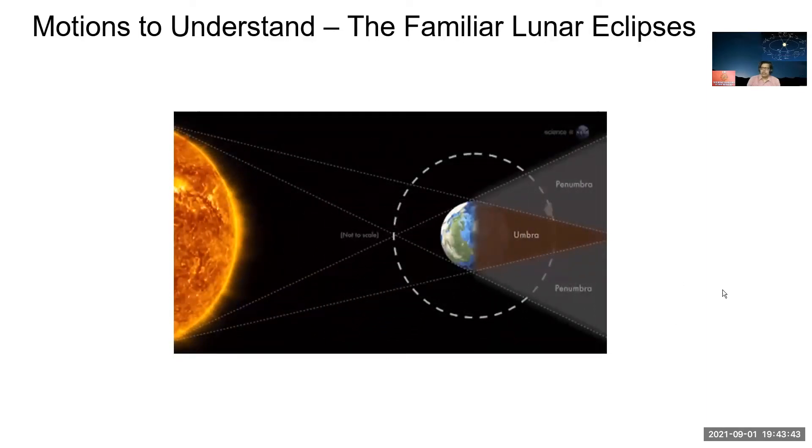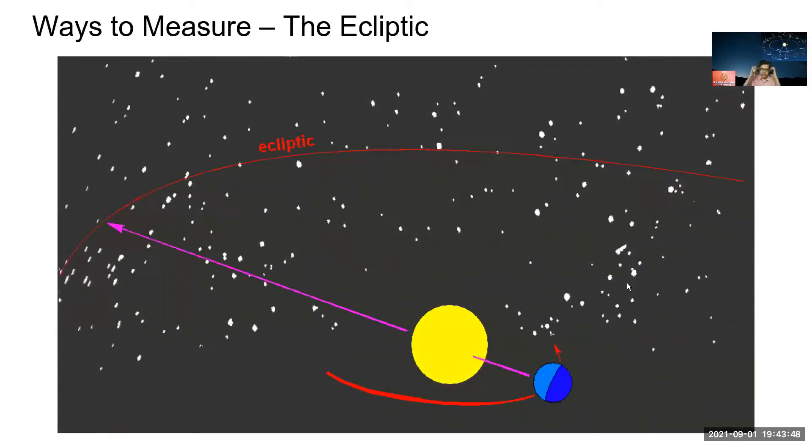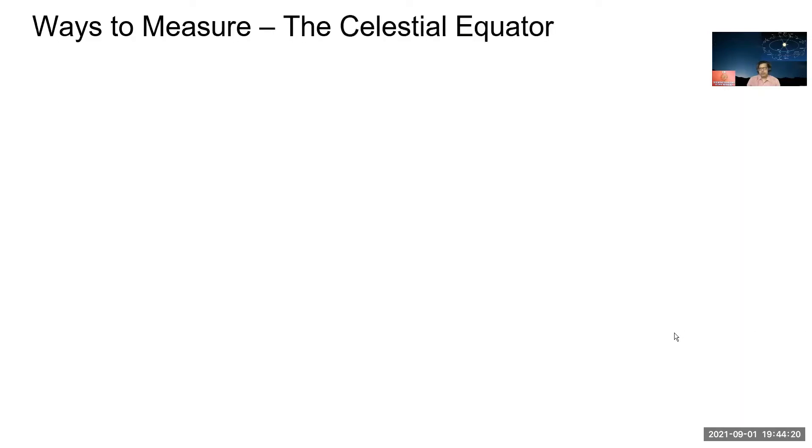And now we have something called ecliptic. So now you can connect to the practical activity that you did. When I asked you to draw that line extending beyond the sun and beyond the Earth's orbit, it's actually basically when Earth is moving like in this short arrow here, it is like looking at the sun. It's the sun's path as seen from the Earth. That's how you can read it. And this is what is the ecliptic.